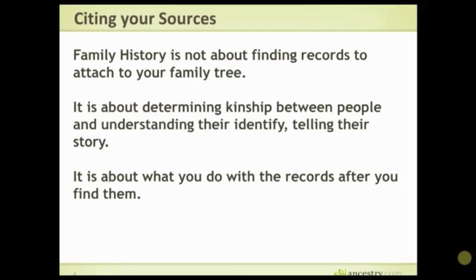This is a recap of what we did in the last presentation. The best reference for citing and sourcing — and there's no one in the genealogy world who will disagree — is 'Evidence Explained' by Elizabeth Shown Mills. You can purchase a downloadable copy at a particular link, or buy a physical copy, but it's about two and a half inches thick. The downloadable copy is cheaper and you can search it, which makes it a lot easier to use.